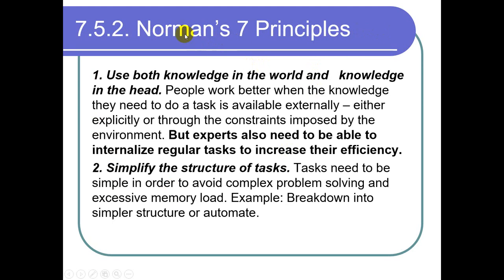Norman's seven principles are said to be the principles to make a complex task into a simpler task. The first principle says: use both knowledge in the world and knowledge in the head. Whenever we are going to do something with our software, we need to have some knowledge about it. Sometimes that knowledge is already in our mind, and sometimes it is explicitly provided by the software interface or controls.